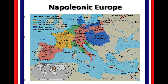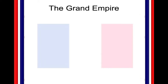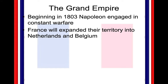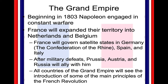Napoleon was powerful — he was no joke in Europe, and Europe was finding that out the hard way. Beginning in 1803, Napoleon is going to start to engage in constant warfare. France is going to expand their territory into the Netherlands and Belgium, and is going to force some of the German states under his control. He's going to govern these satellite states and create this Confederation of the Rhine, which we will talk about — it's going to be very instrumental towards the reorganization and eventually the unification of Germany. He's also going to govern Spain and Italy.